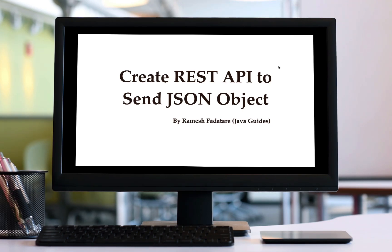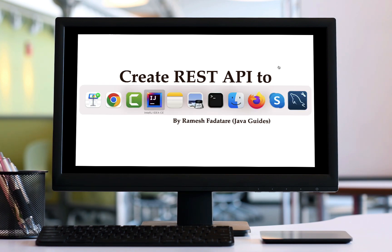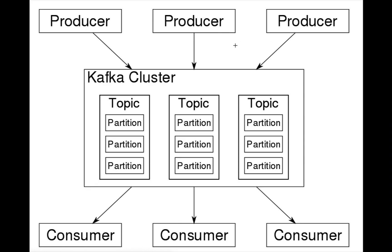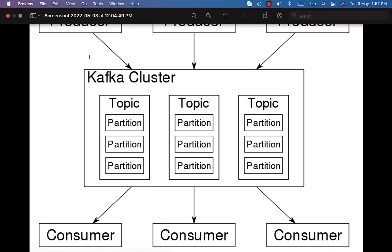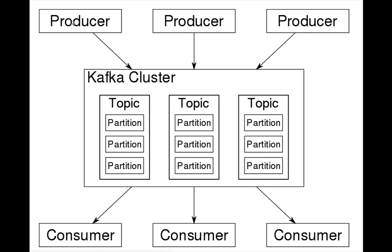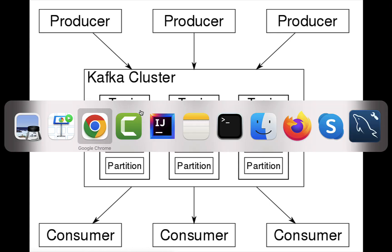Welcome back. In this lecture we'll create a REST API to send a JSON object from the client. As you can see in the Kafka architecture, in the previous lecture we created a Kafka producer for JSON serialization. In this lecture we'll create a simple REST API that will send a JSON object in a request, and then the Kafka producer will send that JSON object to the Kafka topic. Let's head over to IntelliJ IDEA.